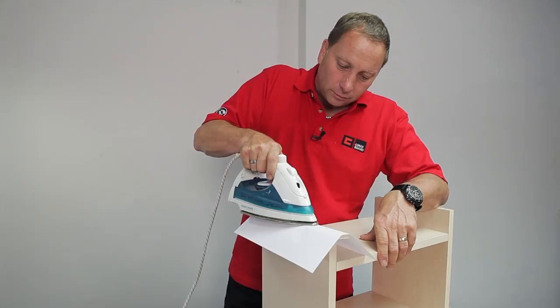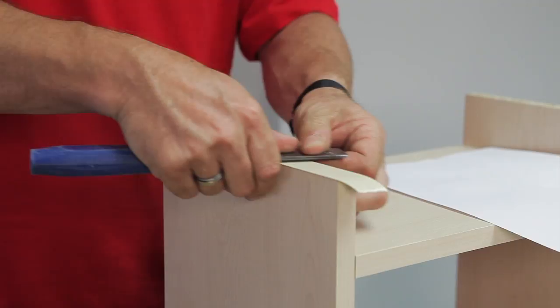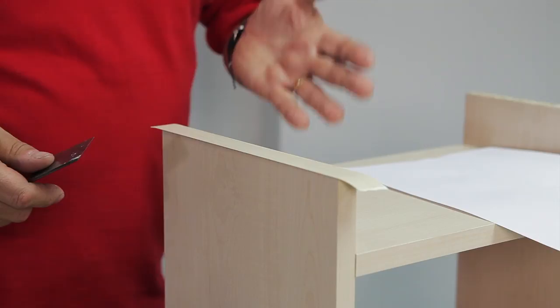I use the back of my chisel to push down and make sure the edging tape is stuck properly. Some people use a piece of wood, a rolling pin, or whatever you feel comfortable using to get the job done.